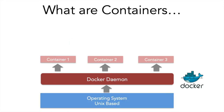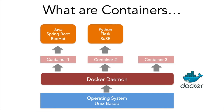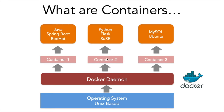For example, container one can contain a Java application and container two can contain a Python application, running on the same hardware. We have a Unix-based host OS, a Docker daemon, and three containers: the first running a Java Spring Boot application on Red Hat OS; container two running a Python Flask web application on SUSE OS; and container three running a MySQL database on Ubuntu OS. These three containers are three different packaged environments, each with their own OS and application stack.